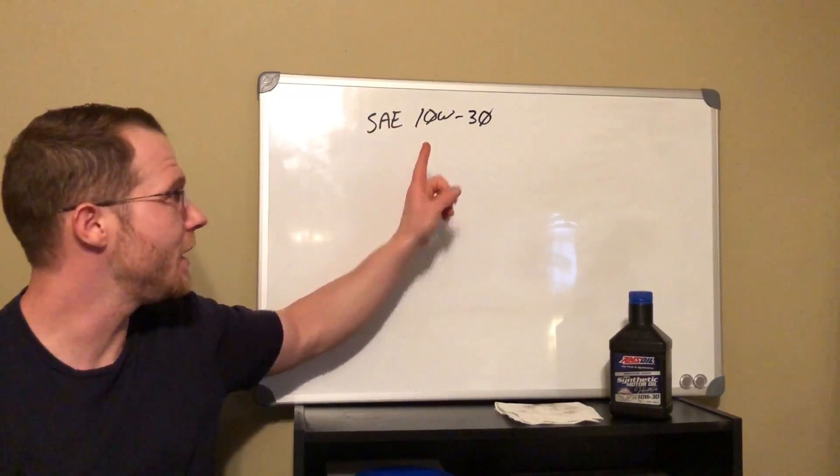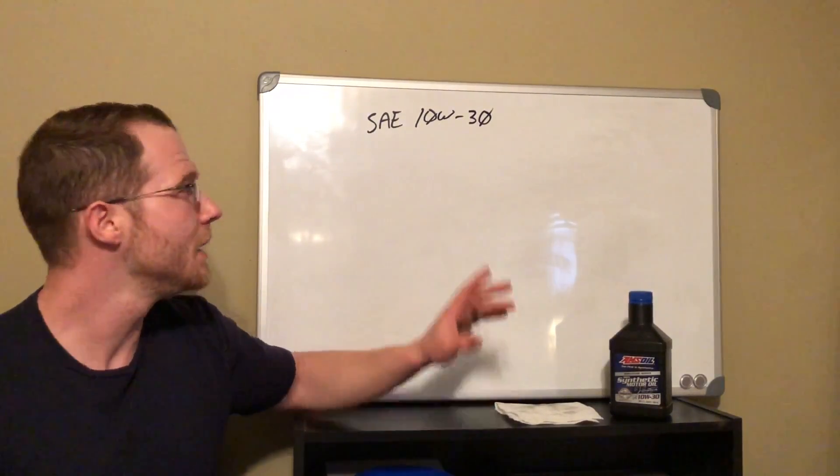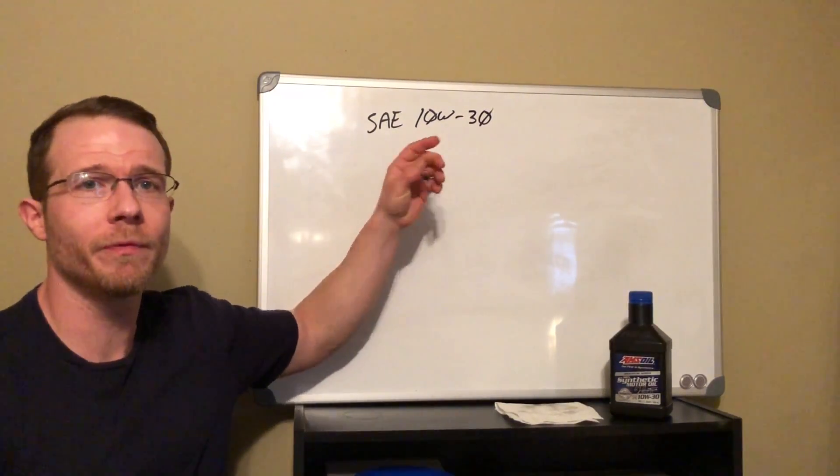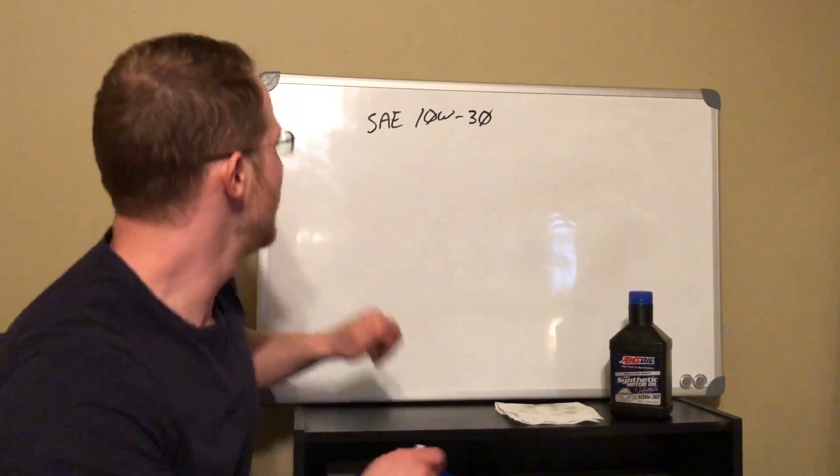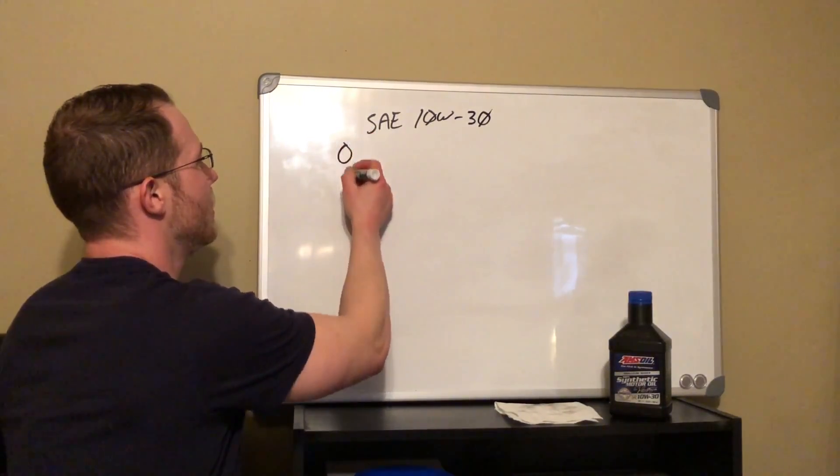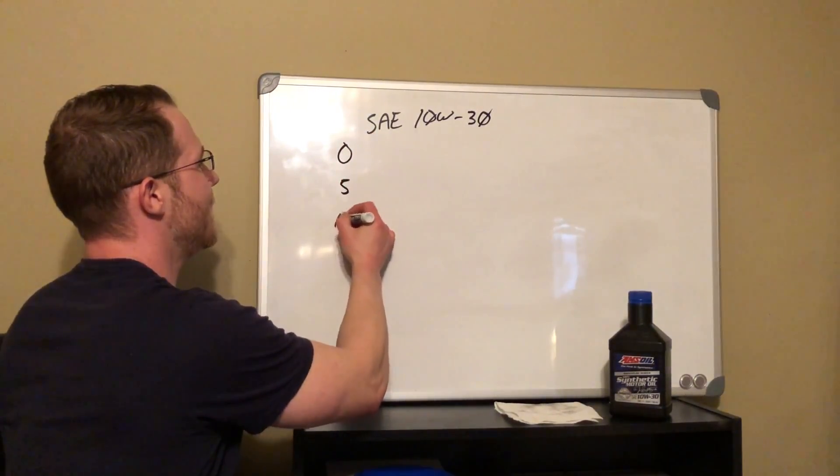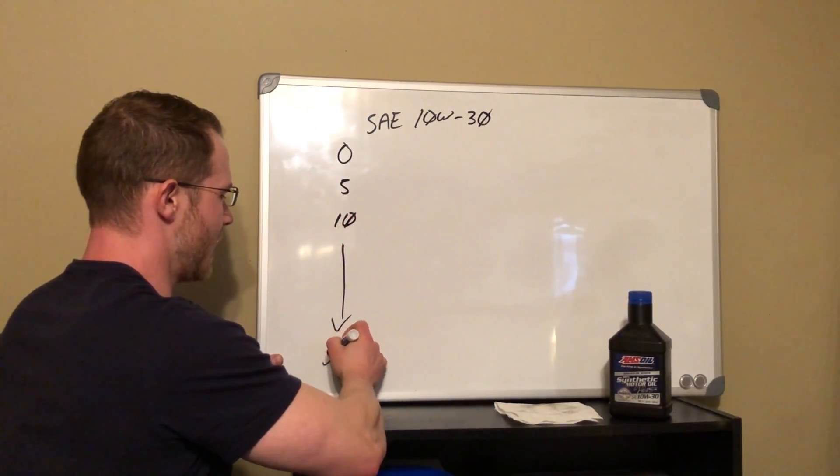This given oil, they use 100 degrees Celsius or 212 degrees Fahrenheit. This given oil flows at this rate at that temperature, and so some common oils would be like 0, 5, 10, and it goes down.